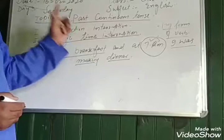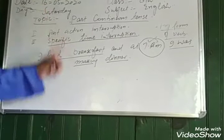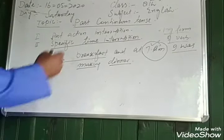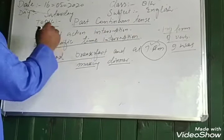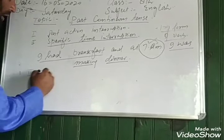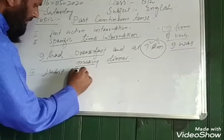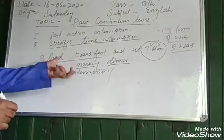There are usually six situations where we can use past continuous tense. One is past action interruption. Second is specific time interruption. Third, we can say habit interruption — or habitual action in the past.